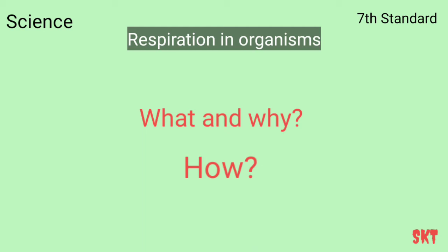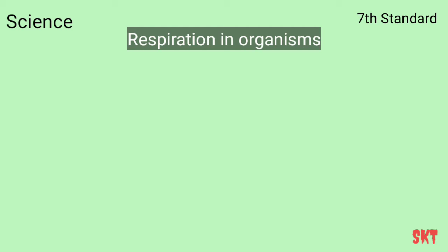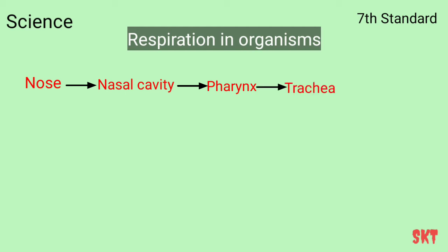If I ask you now how we breathe, you would say we breathe through our nose — but after studying this chapter you must answer differently. First, let's study the pathway through which air enters. Air enters our body through the nostrils into the nasal cavity, from the nasal cavity into the pharynx, from the pharynx into the trachea, and from the trachea it ends up in the lungs.